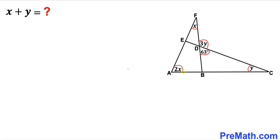Welcome to pre-math. In this video we have these two triangles ABF and ACE put together as shown in the diagram, such that angle A is 2x, angle C is y, and angle F is x. Furthermore, angle BDC is 63 degrees and angle FDC is 3 times y. Our task is to calculate angle x plus y.